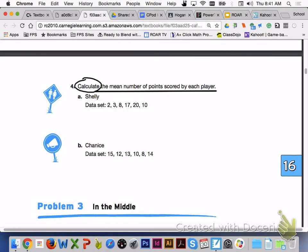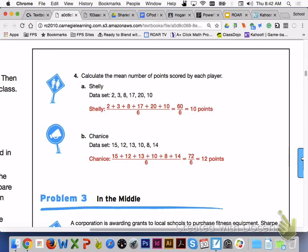Please turn to page 1079. Answer number four, letter A, and letter B with your group members. For number four, letter A, when you add up all of Shelly's scores and divide by six, Shelly's mean is ten points. For letter B, when you add up all of Shanice's score points and divide by six, Shanice's mean is twelve points.